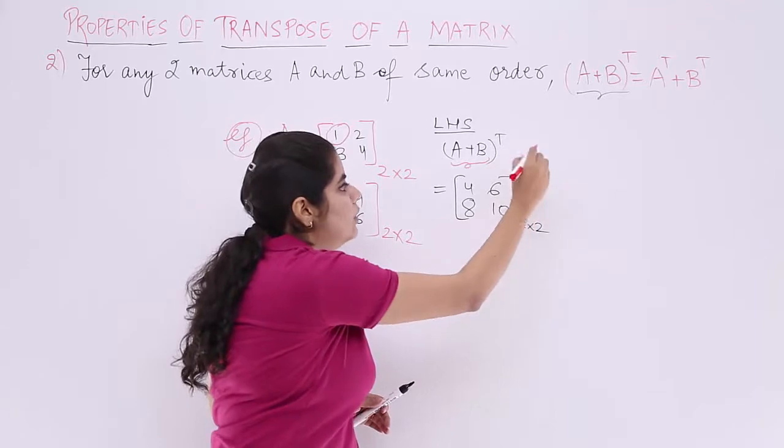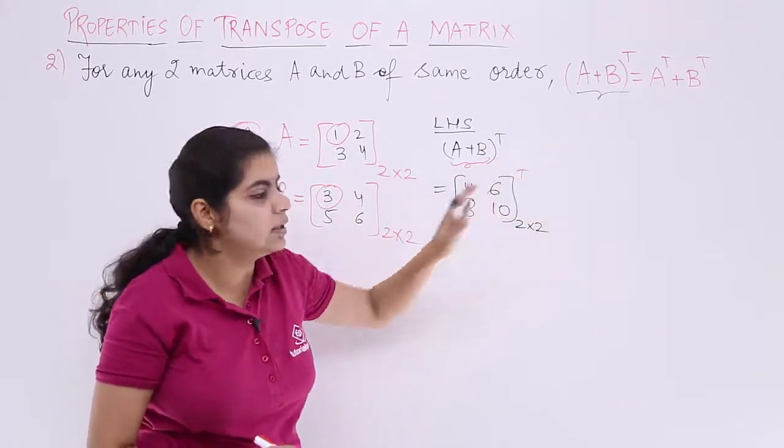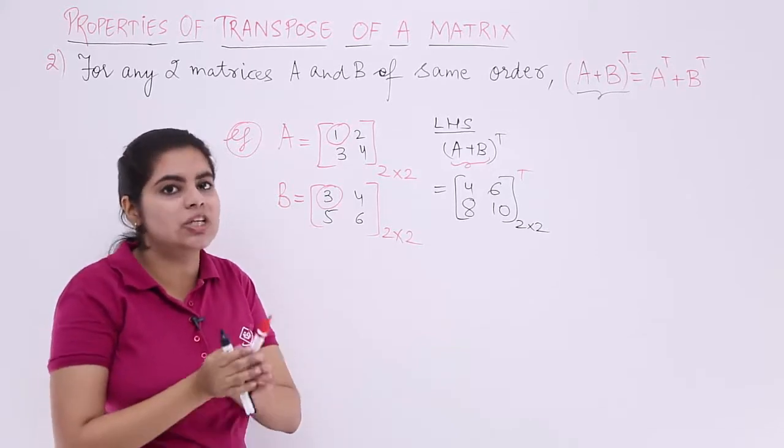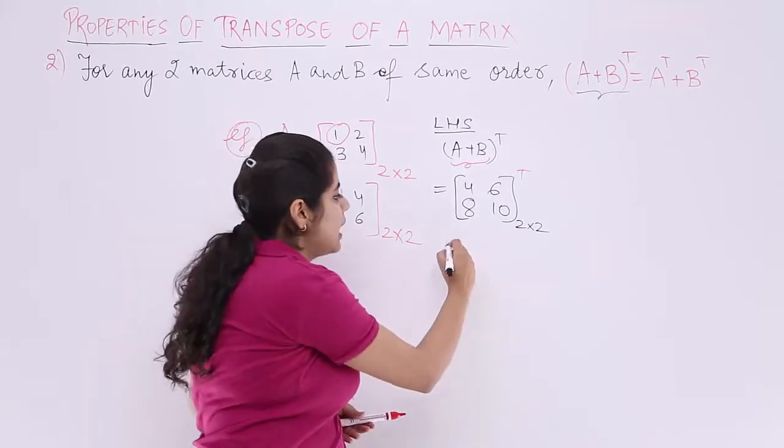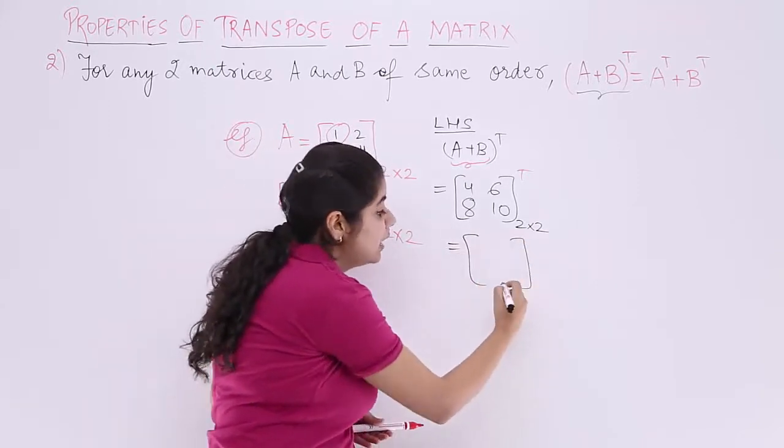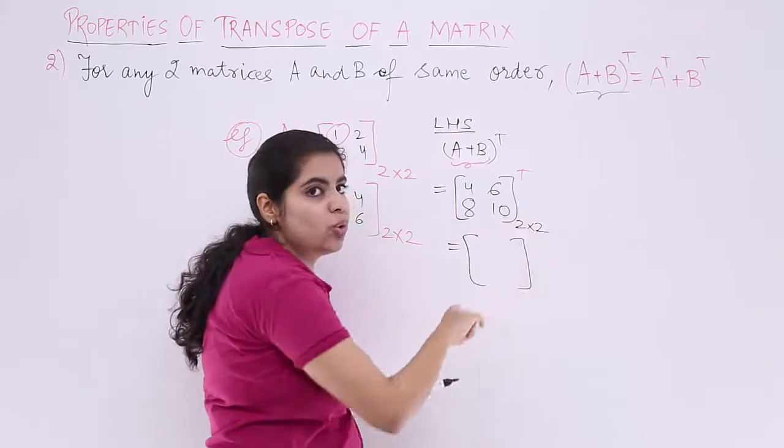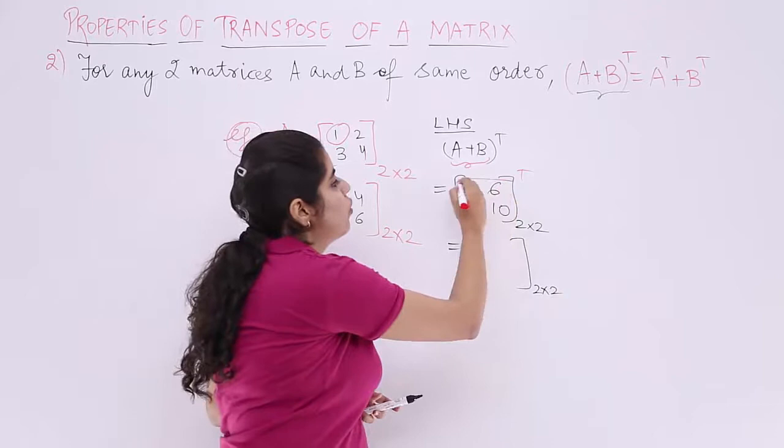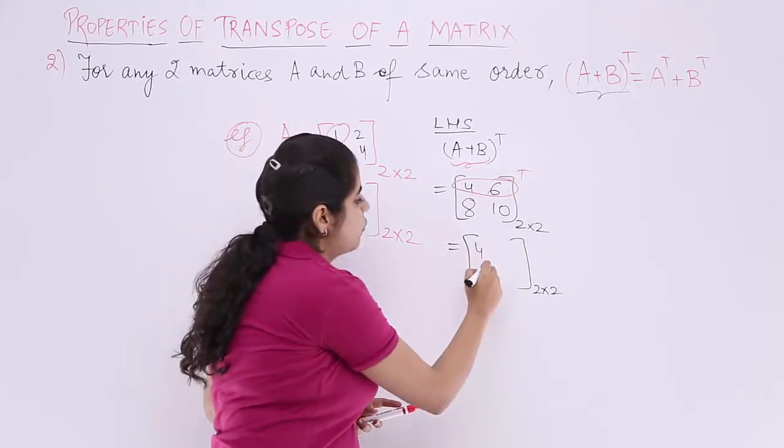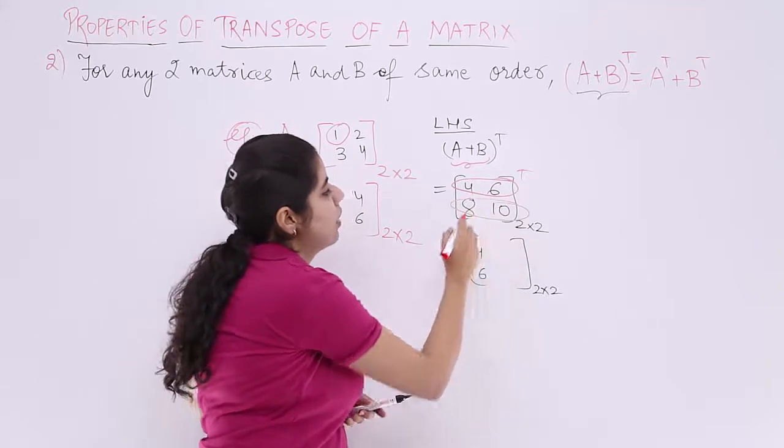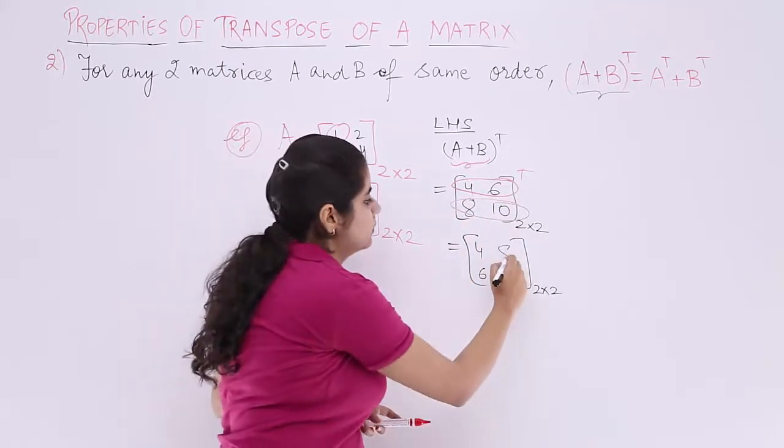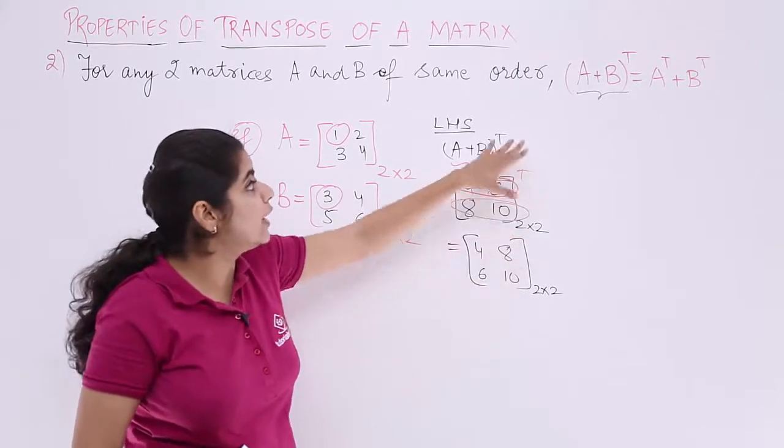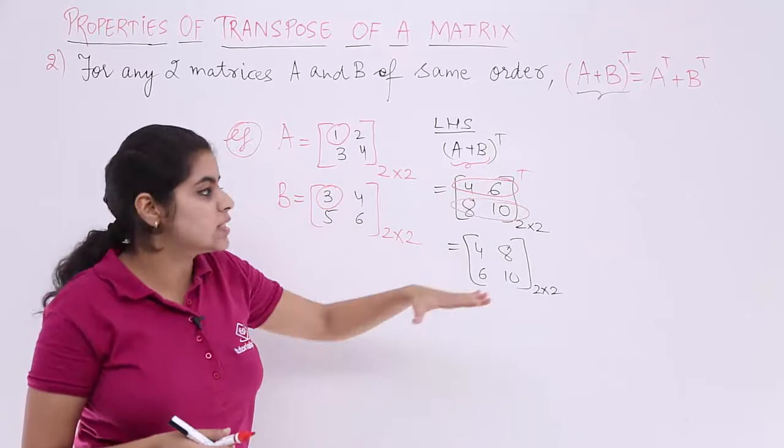And we are supposed to find out the transpose of it. I write there T. T is written over here. I have to write transpose here. Transpose means what? You basically have to interchange the rows with the columns and the columns with the rows. So my answer will be a new matrix which has 2×2, because even after interchanging 2 with 2, you get 2×2. The first row 4, 6 becomes the first column. So it is 4, 6. The second row 8, 10 becomes the second column. It is 8, 10. So it is 4, 8, 6, 10 which is the result of A plus B whole transpose.